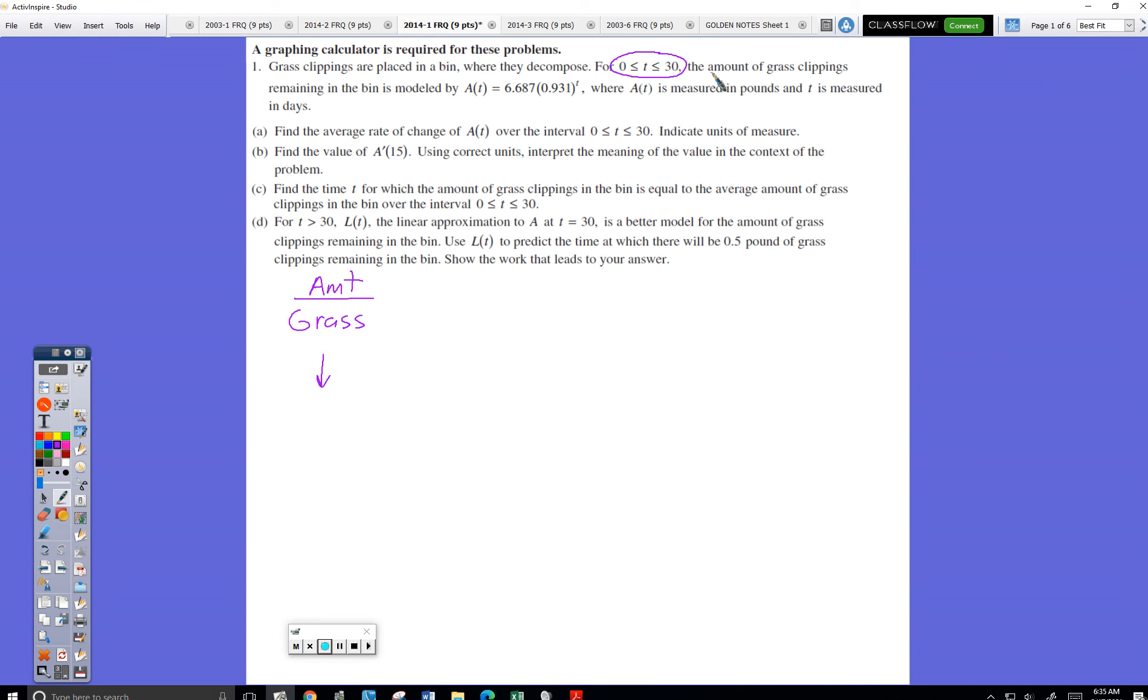The amount of grass clippings remaining in the bin. So it's got grass in the bin, the bin goes down. The amount that is in the bin is this formula. So the formula tells me at any time how much grass is in the bin. Now we've been pounds times measuring days.